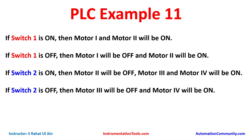For Switch 1 and Switch 2 we will use normally open contacts. For Motor 1 and Motor 2, Switch 1 should be on. When we turn off Switch 1, Motor 1 will be off but Motor 2 remains on — for that we will implement latching for Motor 2. Similarly, for Motor 2 to turn off, Switch 2 should be on, so we will use Switch 2 as a normally closed contact. For Motor 3 and Motor 4, Switch 2 will be used as a normally open contact, and when Switch 2 is turned off, Motor 3 turns off but Motor 4 remains on — for that we will latch Motor 4.